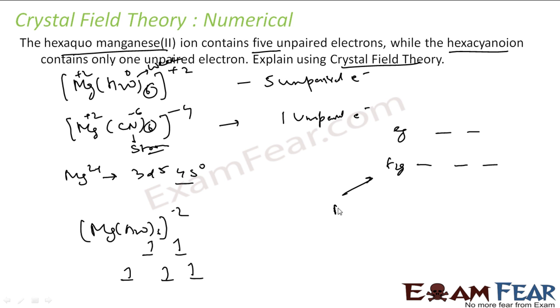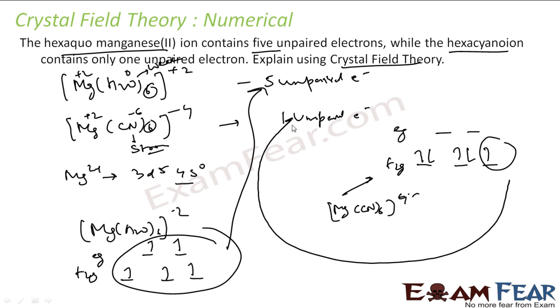In case of Mn(CN)6^4-, this is my t2g and this is eg. Here CN- is a strong ligand. It will force pairing. First electron will come here, second will come here, third will come here, fourth will be forced to pair, fifth will be forced to pair. So you see, in this case there are 5 unpaired electrons with water, and in this case there is only 1 unpaired electron with cyanide.